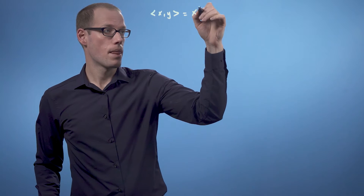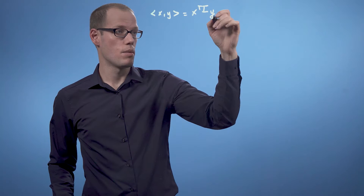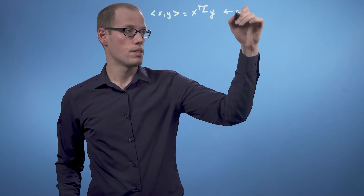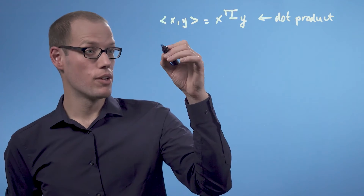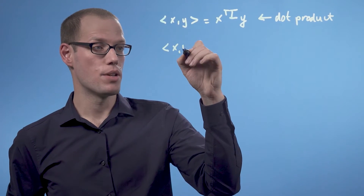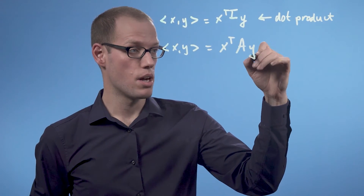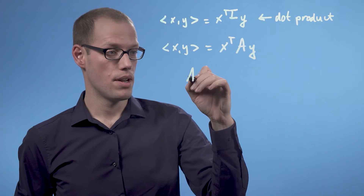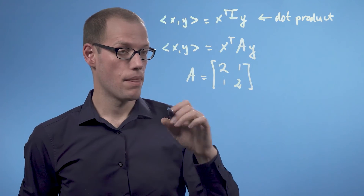Let's have a look at an example in ℝ². If we define our inner product to be x transpose times the identity matrix times y, then we get exactly the dot product that we are very familiar with. But now, let's have a look at a different example where we define our inner product to be x transpose times A times y, where A is the matrix [2, 1; 1, 2].